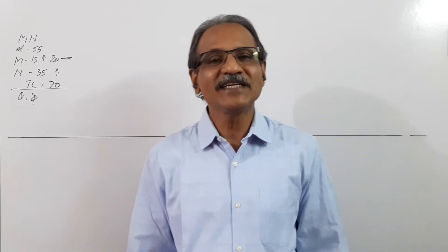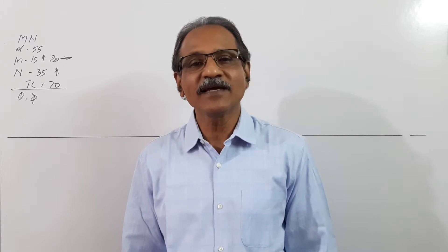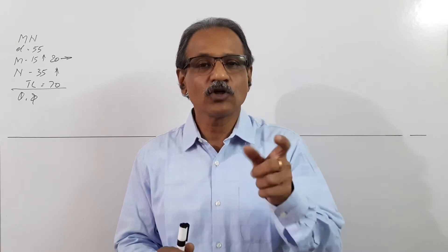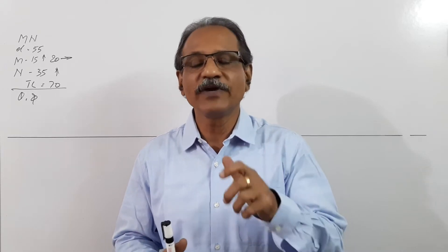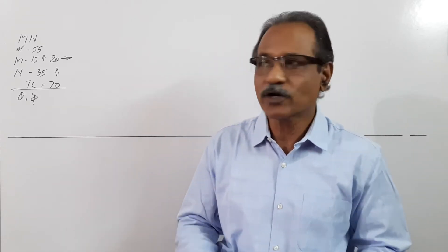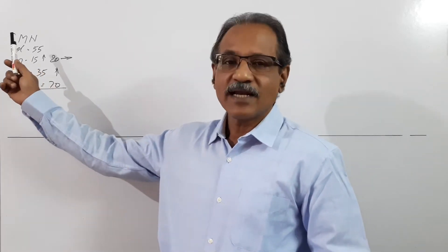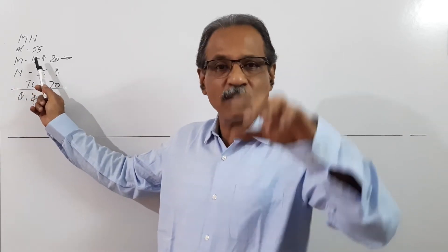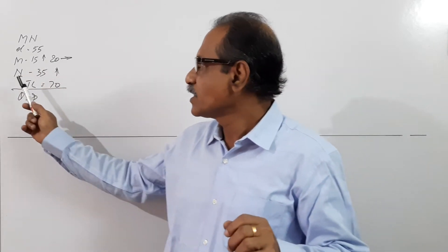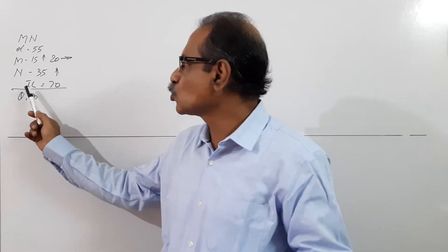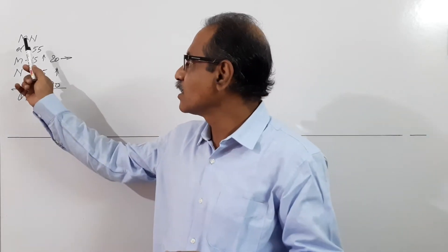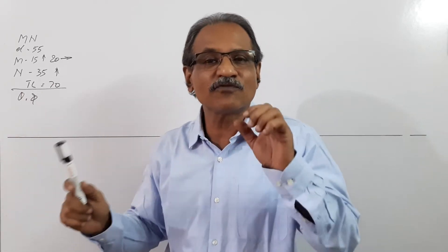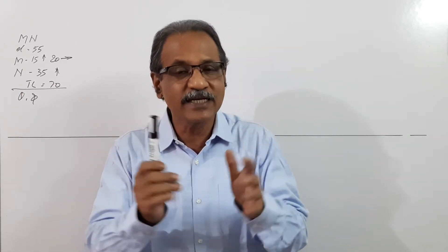Hi students, welcome to Engineering Graphics class. In this class we are solving the university question paper of Kerala Technical University (KTU). We are solving the first question. In this video we will be solving the questions in the first module. Problem one says that line MN has got its elevation length 55 mm. The end M is 15 mm above HP and 20 mm in front of VP. The end N is 35 mm above HP. The true length is 70. You are asked to draw the projections and find out the true inclinations of the line to the reference planes, which are theta and phi.